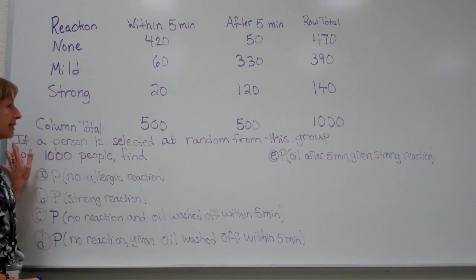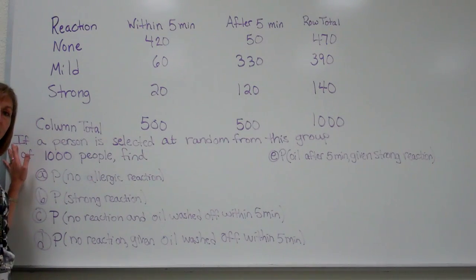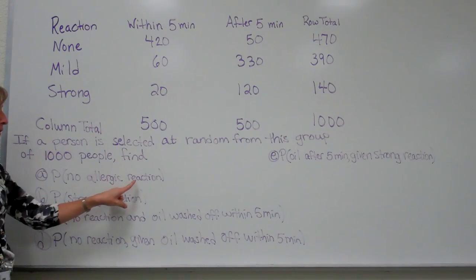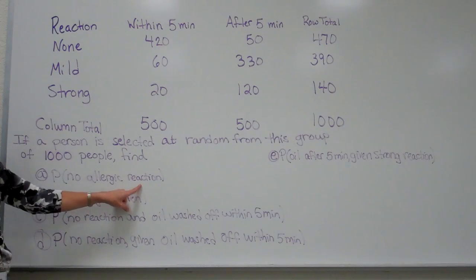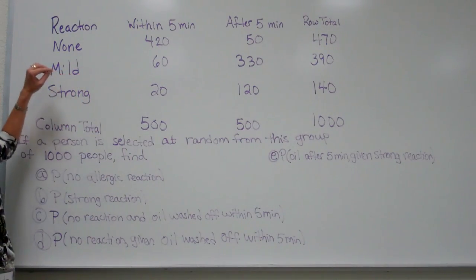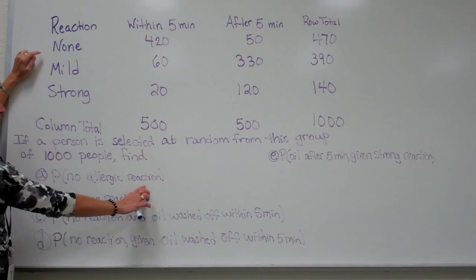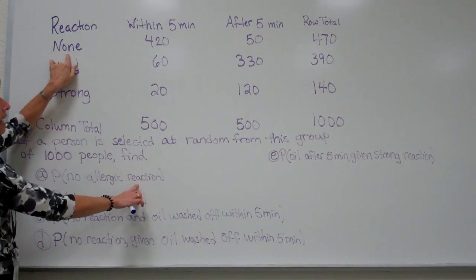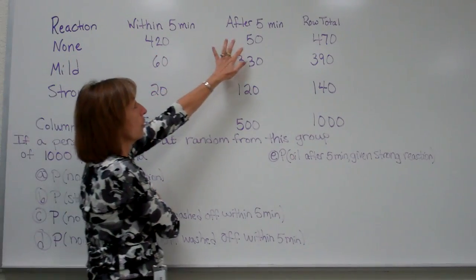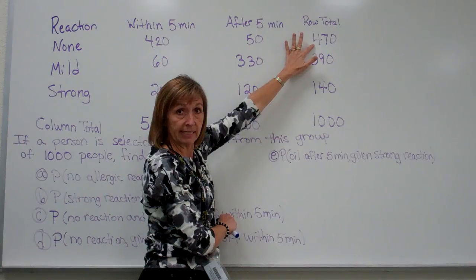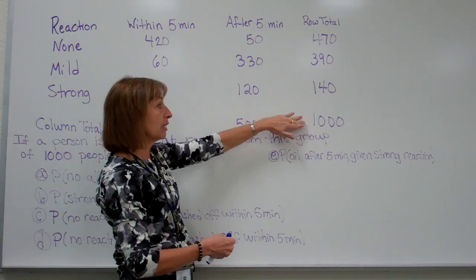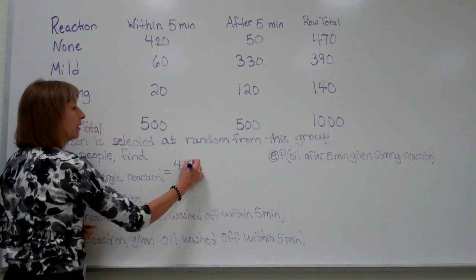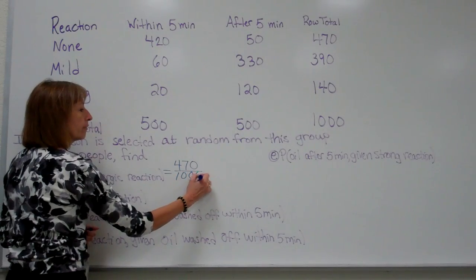So for example, if we're asked if a person is selected at random from this group of thousand people to find the probability that there's no allergic reaction, then what I would want to do is find between the column headings or the row headings what fits this requirement. No allergic reaction would be the no reaction, and so that would be the total from this row, which is 470 as our favorable, divided by the total of 1000. So we would have 470 over 1000 for that probability.